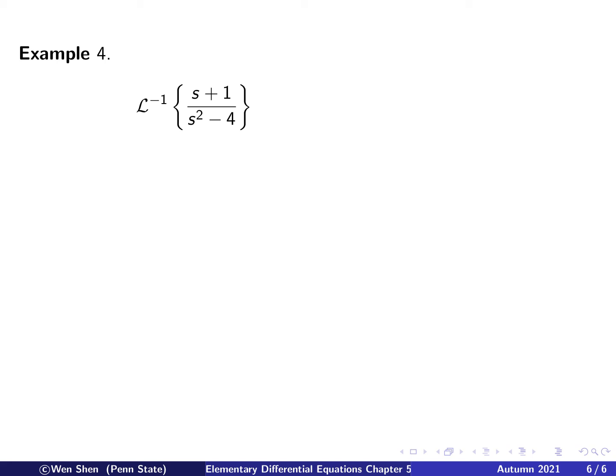One more example. I want to find the inverse transform of (s + 1) over (s² - 4). So again, from experience, we'll analyze the denominator. Here is s² - 4, which is 2². And if I look into those functions that I know, I see that it doesn't match any of them. Nobody has s² minus some number square. Then I know that this denominator actually can be factorized. Let's factorize it and see what happens.